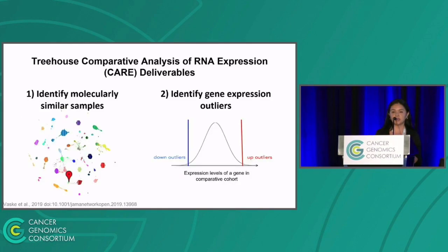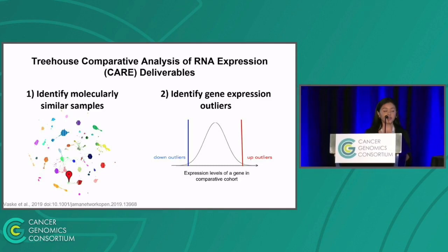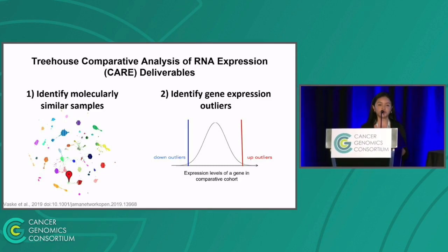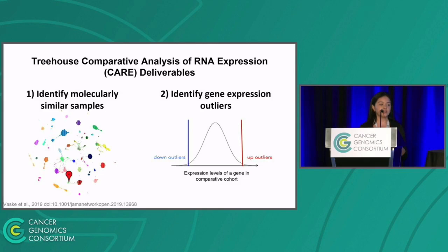My lab uses a method that we published called Comparative Analysis of RNA Expression, also known as CARE. This is an end-of-one analysis where we compare an RNA sequencing profile of a single patient to an entire compendia that we have curated with over 12,000 tumor RNA-seq profiles from both adult and pediatric patients. This analysis yields two deliverables: one, it identifies molecularly similar samples using Spearman rank correlations, and two, it identifies abnormally expressed genes in the patient's tumor compared to a comparative cohort of your choosing.